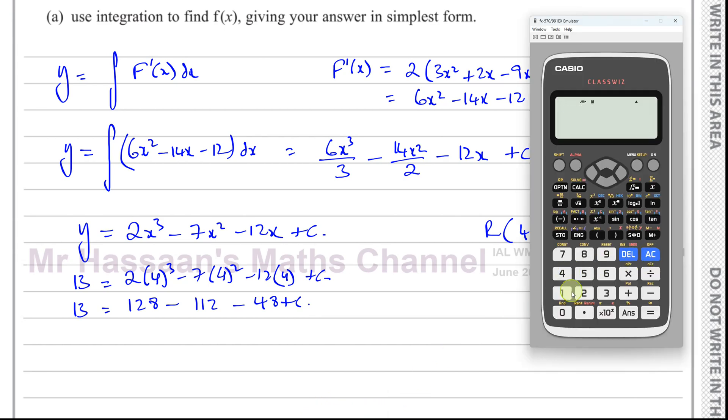Let's just make sure of that. We have 2 times 4³, 128. We have 7 times 4², 112. So 128 minus 112 minus 48 gives us minus 32.